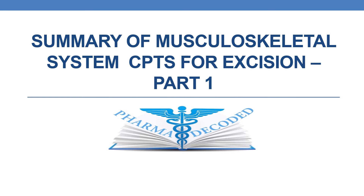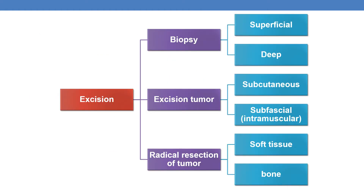Hello everyone. Now let us discuss the summary of musculoskeletal system CPTs for excision, part 1. In the current session, we will be focusing on 3 areas of excision: biopsy, excision of tumor, and radical resection of tumor. The biopsy CPTs are categorized into 2 types — superficial and deep — whereas excision of tumor is categorized by whether the tumor is subcutaneous or subfascial (intramuscular), and radical resection CPTs are categorized by whether it is soft tissue or bone.